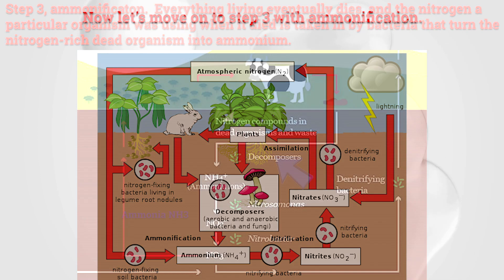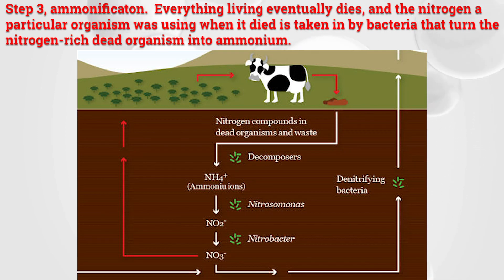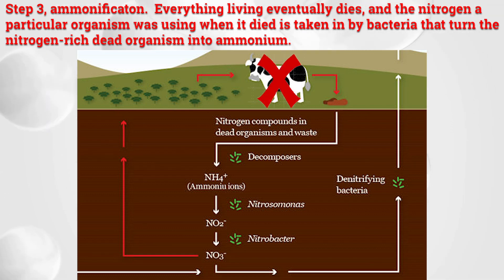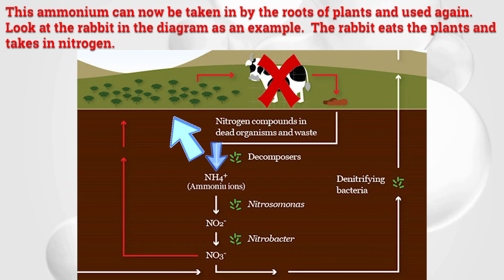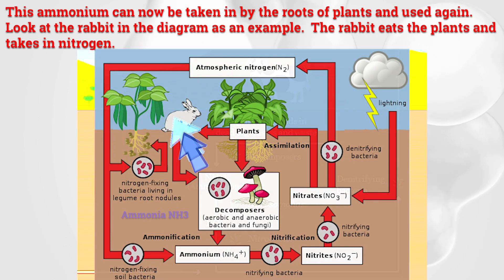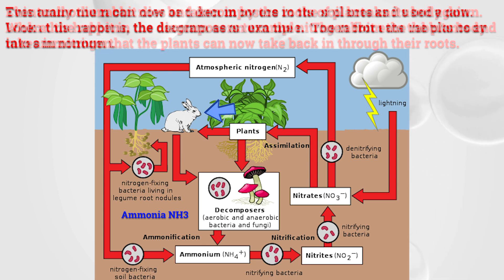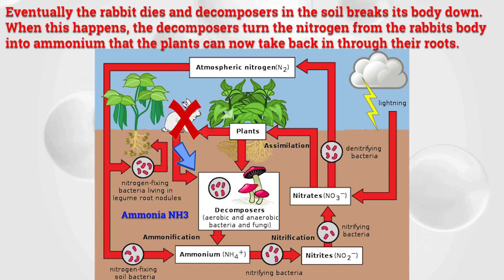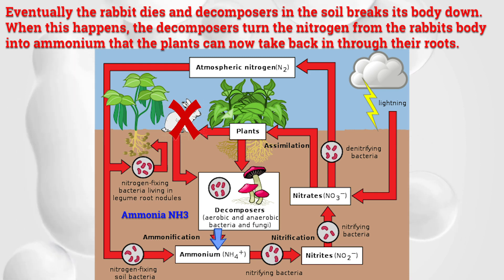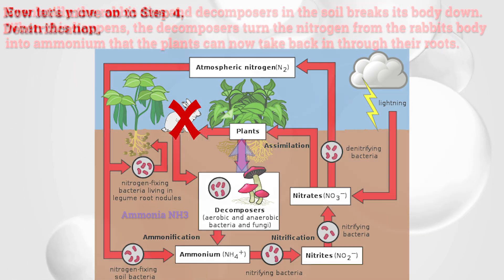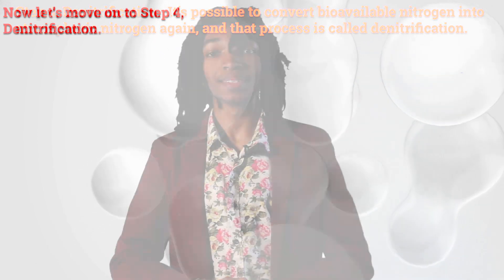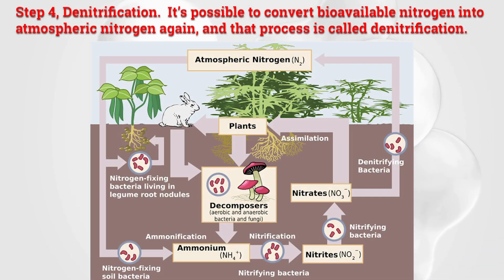Step three: ammonification. Everything living eventually dies, and the nitrogen a particular organism was using is taken in by bacteria that turn the nitrogen-rich dead organism into ammonium. Look at the rabbit in the diagram as an example — the rabbit eats plants and takes in that nitrogen. Eventually the rabbit dies, decomposes, and decomposers turn the nitrogen from the rabbit's body into ammonium that the plants can then take back up through their roots.